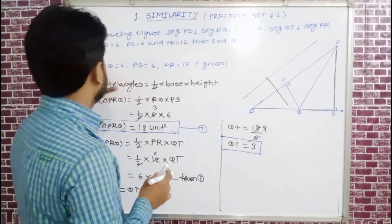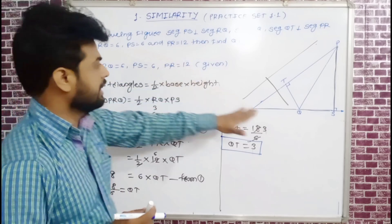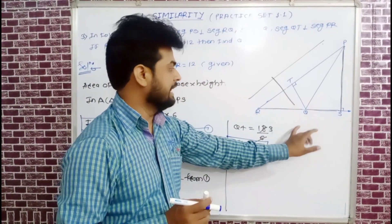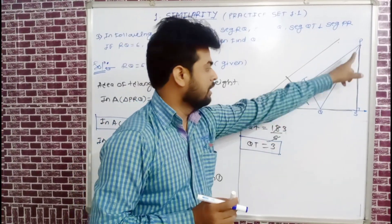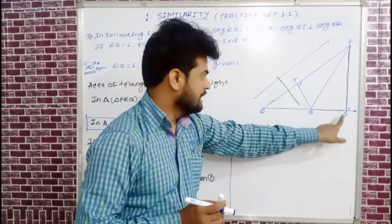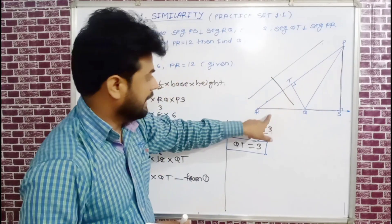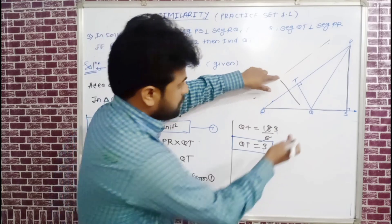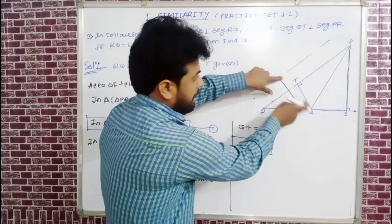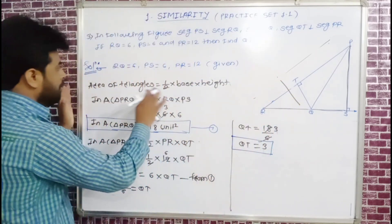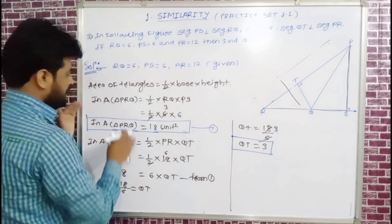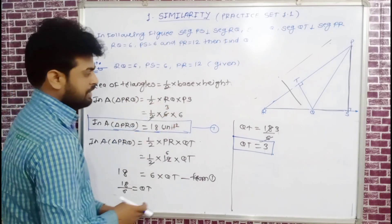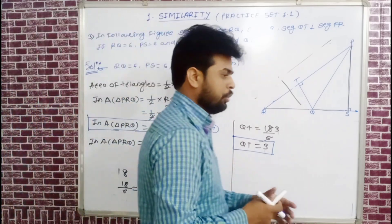That was Example 3. In the figure, we had to find QT. First, in triangle PRQ with base RQ and height PS, we calculated the area as 18 square units. Then using base PR and height QT, we solved to get QT = 3.